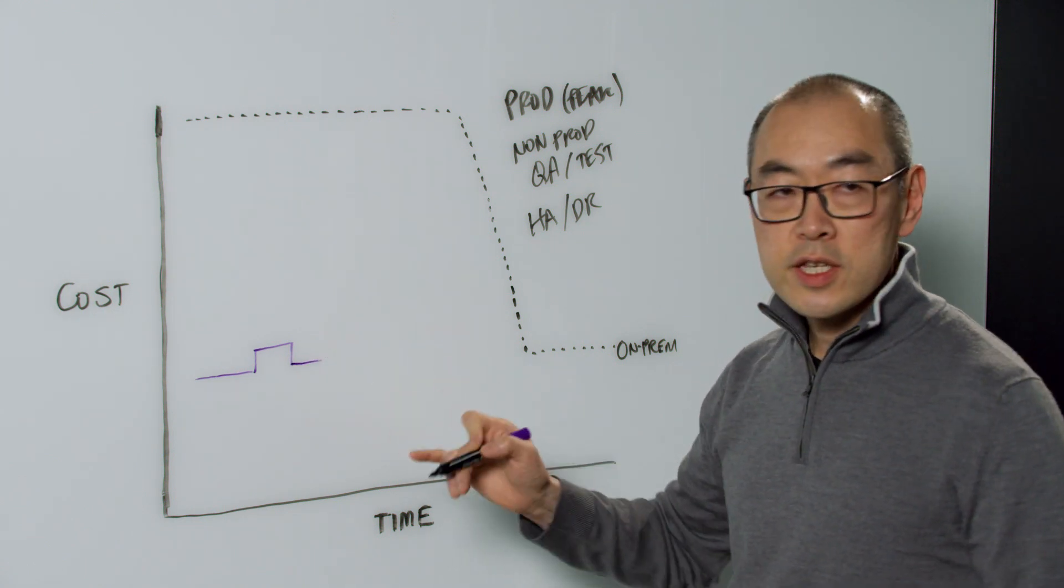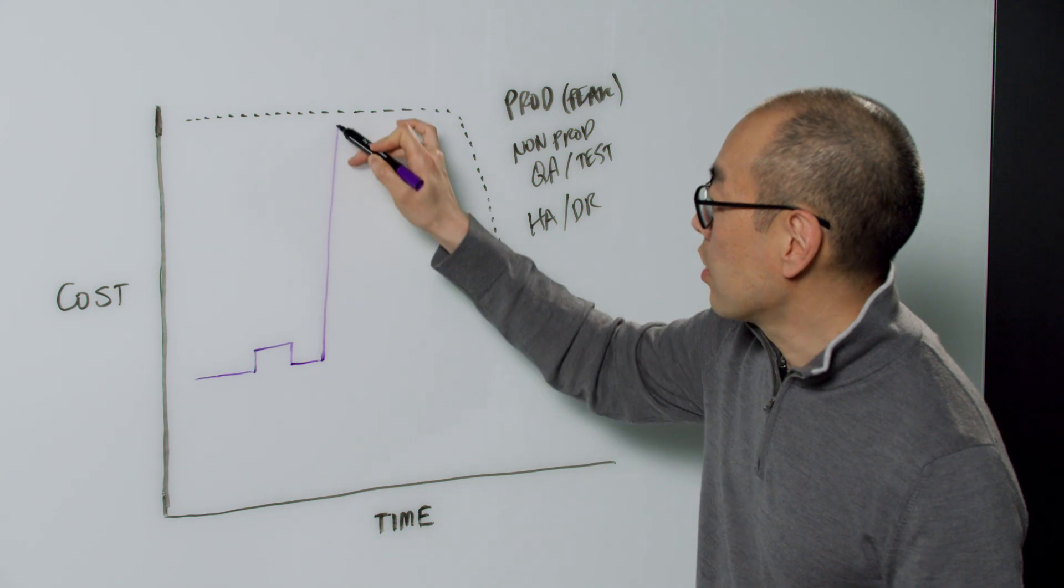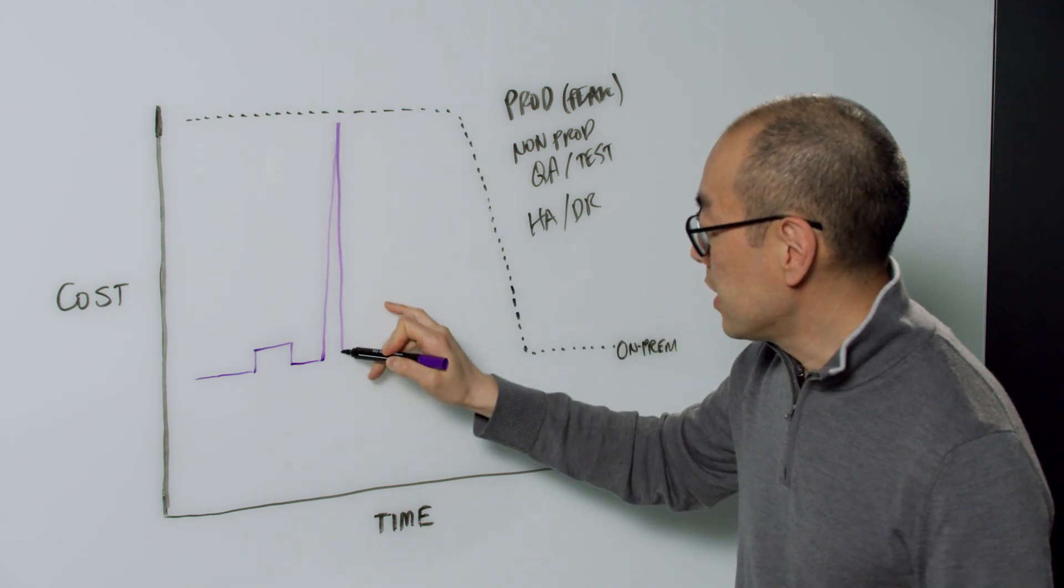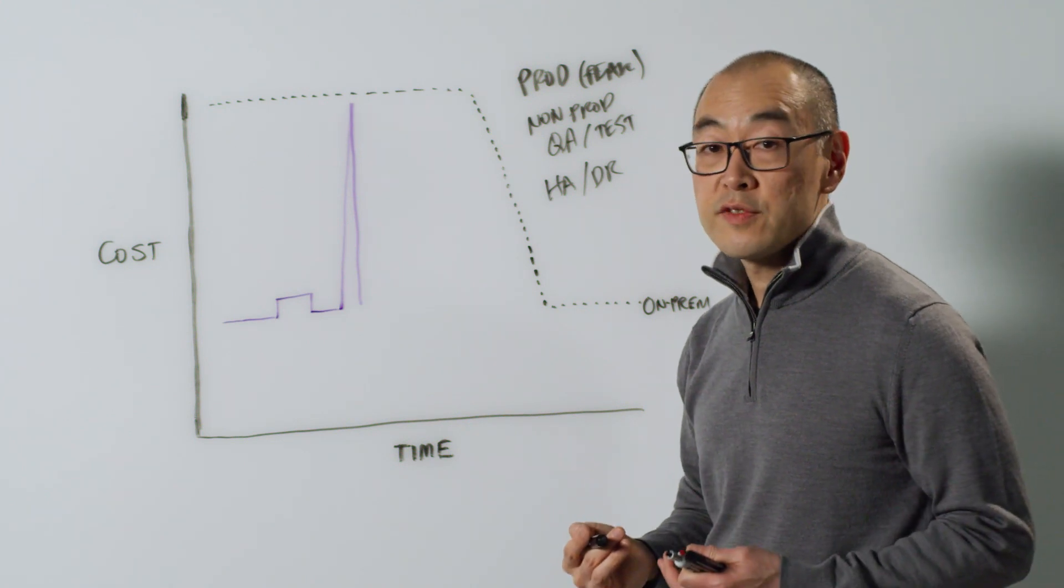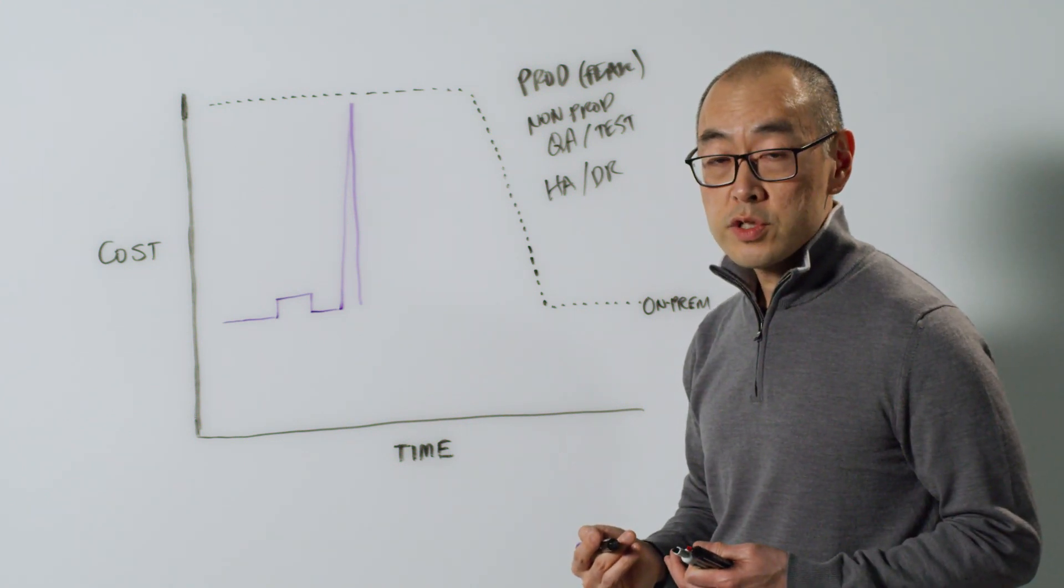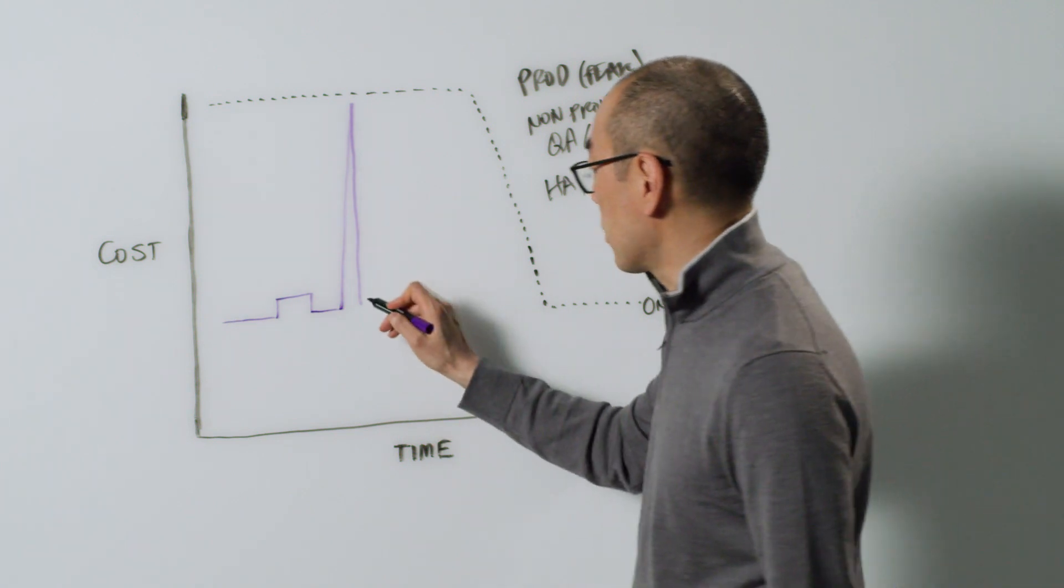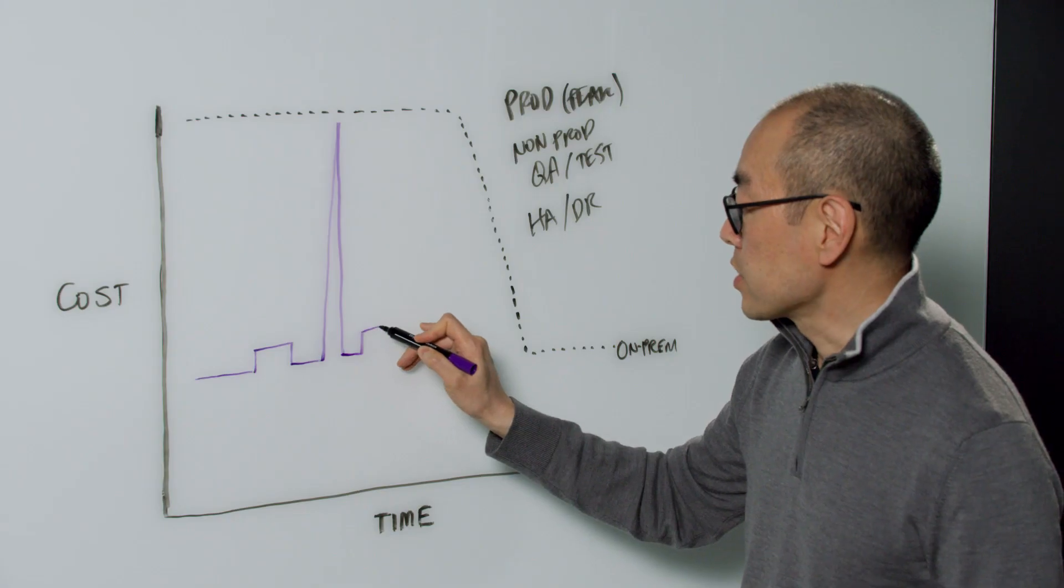When you need to scale for peak, it can auto-scale and then back down when the holiday season is over, when the last few days of your monthly close is over. You can scale right back down and it goes like this.